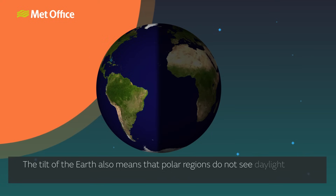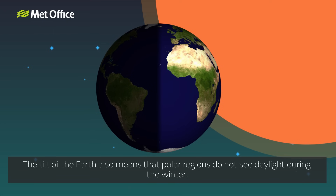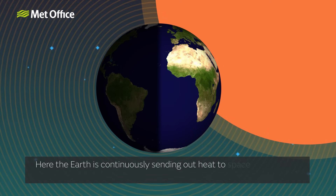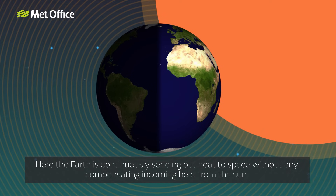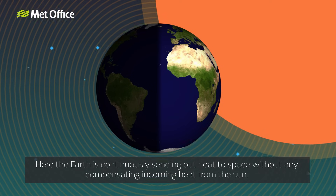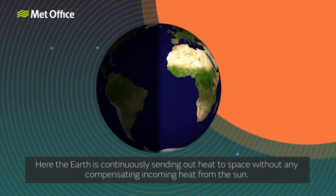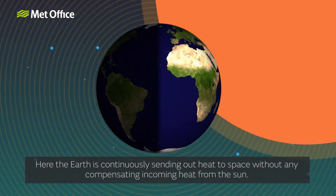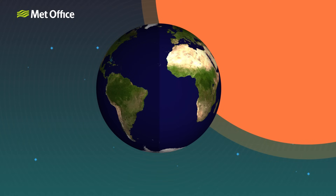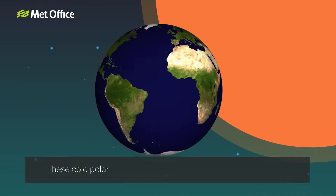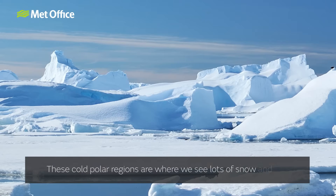The tilt of the Earth also means that polar regions do not see daylight during the winter. Here the Earth is continuously sending out heat to space without any compensating incoming heat from the Sun. These cold polar regions are where we see lots of snow and ice.